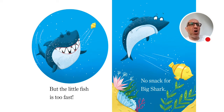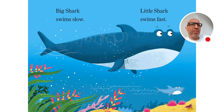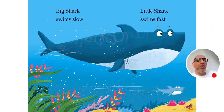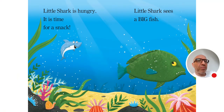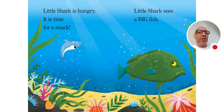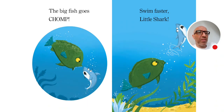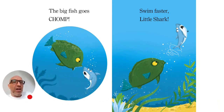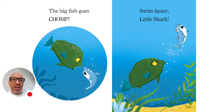Big shark swims slow. Little shark swims fast. Little shark is hungry — it is time for a snack. Little shark sees a big fish. The big fish goes chomp. Swim faster, little shark, swim faster!